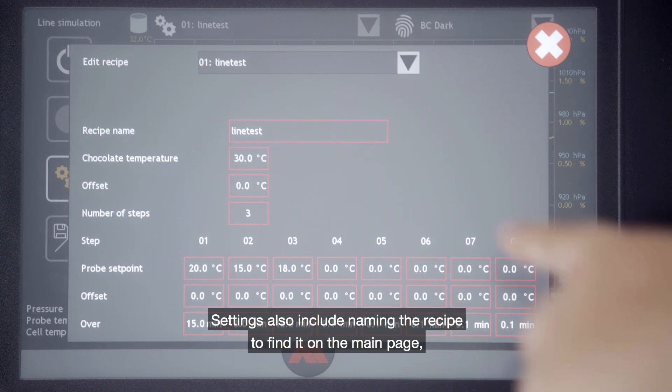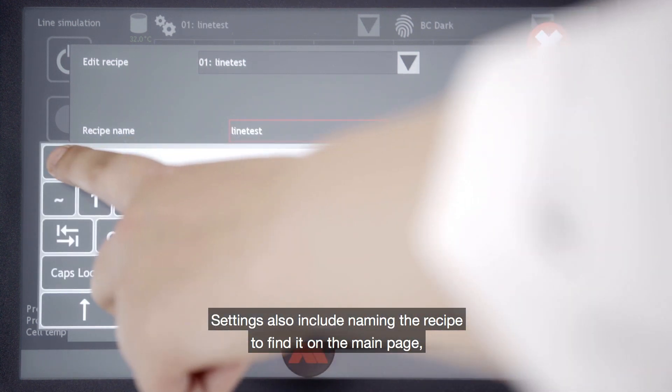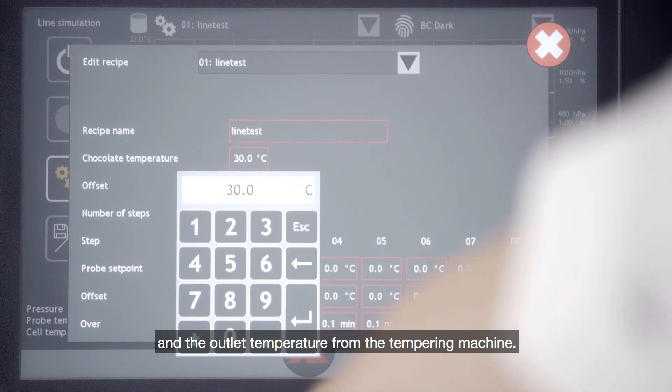Settings also include naming the recipe to find it on the main page and the outlet temperature from the tempering machine.